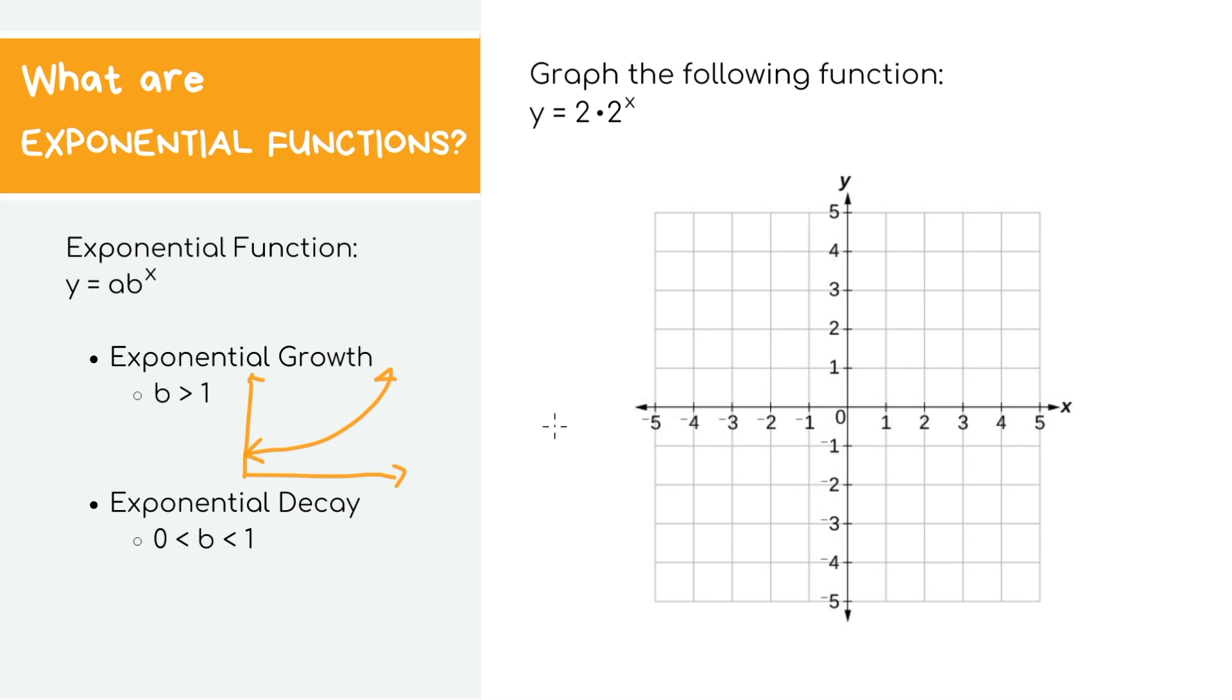These are often used in real-world scenarios to model population growth and compound interest, which is really interesting if you're into money. I mean, who isn't into money? And when we're talking about decay, it's kind of the opposite where you're starting at a certain number, then it decreases super sharply exponentially. And this is used in models for exponential decay for radioactive stuff, like how long it takes for things to not be radioactive.